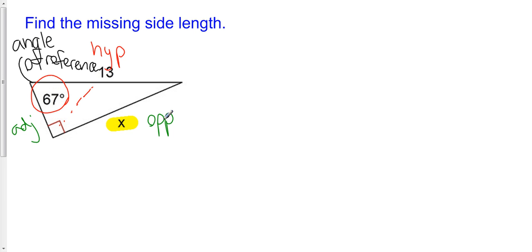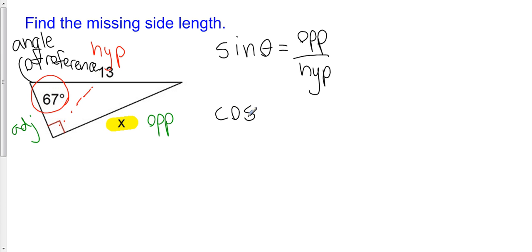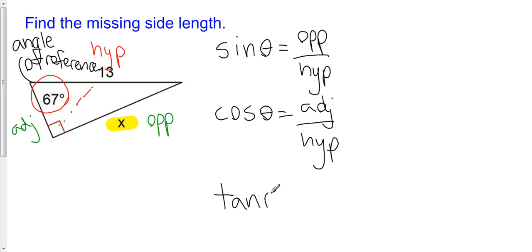In order to solve for a missing side in the right triangle, I need to use a primary trigonometric ratio and set up an equation. I know three primary trigonometric ratios. The sine of theta is equal to the opposite side over the hypotenuse. The cosine of theta is equal to the adjacent side over the hypotenuse. And the tangent of theta — where theta is just any angle of reference — is the opposite side over the adjacent side.